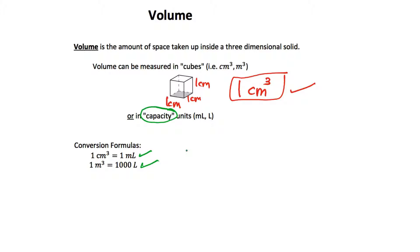So we measure volume, which is the amount of space inside a three-dimensional object, in one of two ways: cubes, the number of cubes inside that object, or capacity units for liquid, commonly milliliters or liters.